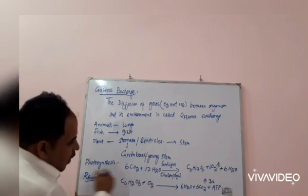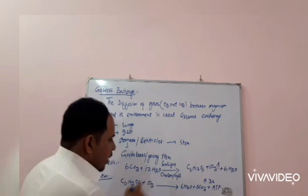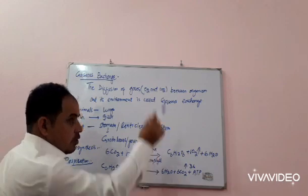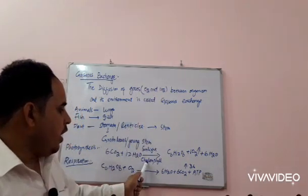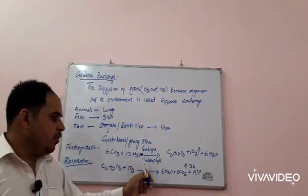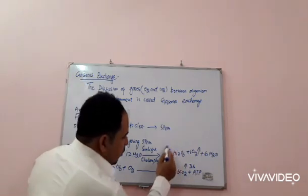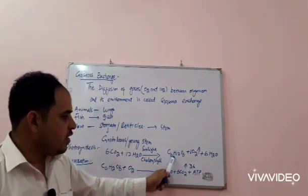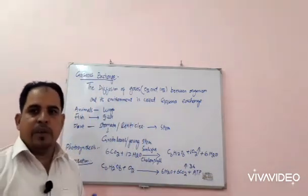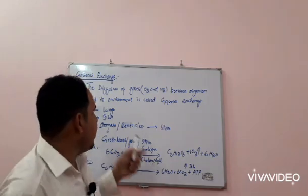Six molecules of carbon dioxide react with 12 molecules of water in the presence of sunlight, which is used for energy. Chlorophyll is the main acting substance for plants to produce their food. It will produce glucose (C6H12O6) and oxygen as a byproduct.